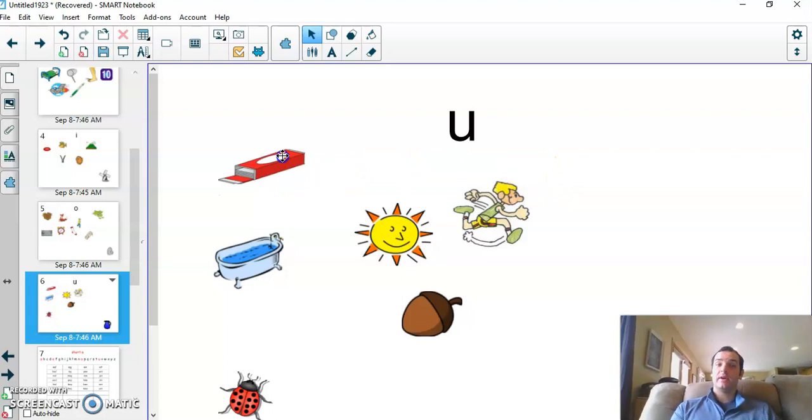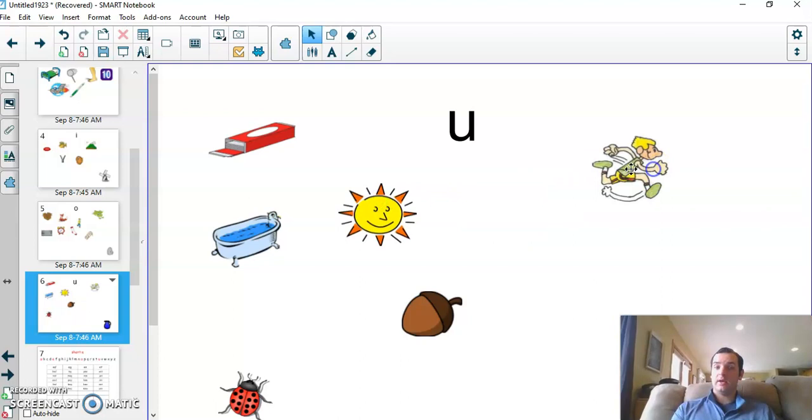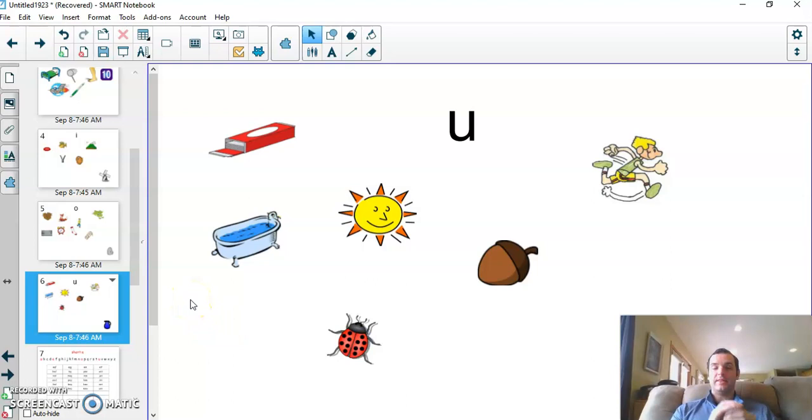Here's the short u sound, it's an uh sound, so we have gun, tub, sun, run, nut, and bug.